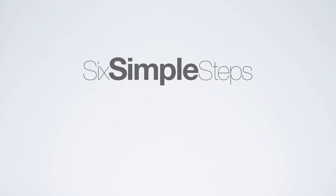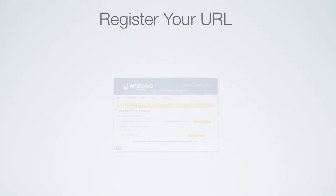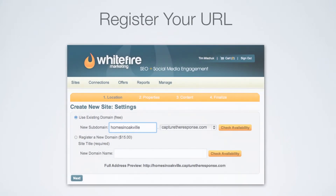Six simple steps help you get started. Very easy to do. The first step is registering your URL — you can either use an existing domain or register a brand new domain and use that on your site.